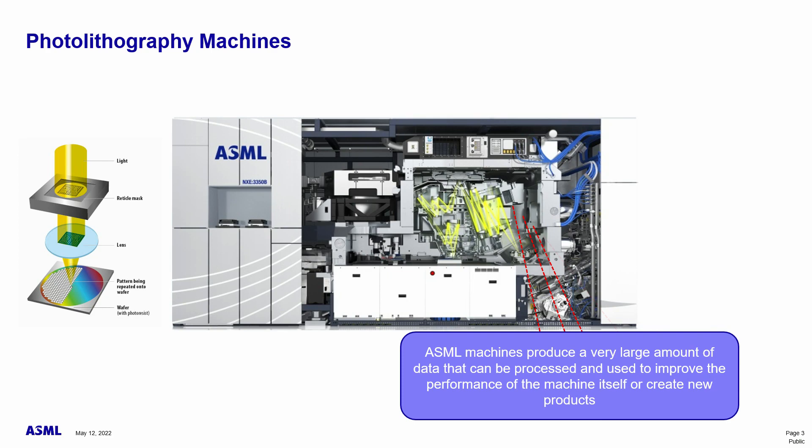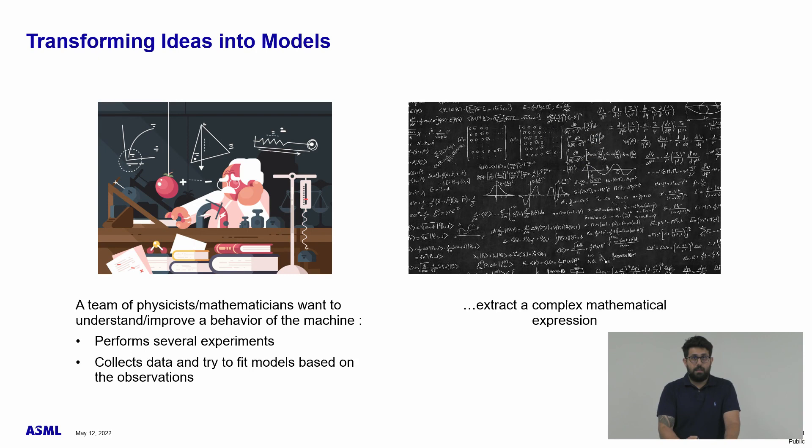Such machines are very complex. They produce a significant amount of data coming from the thousands of sensors spread all around the machine, like the many sensors present on the wafer stage and on the optical columns that control the mirrors. Given such complexity, a project starts with investigation and prototyping. A team of mathematicians, physicists, and engineers — that we call functional engineers — perform experiments on the machine.